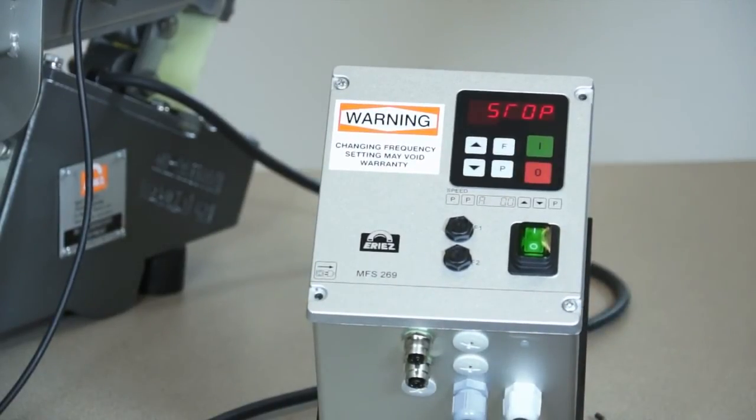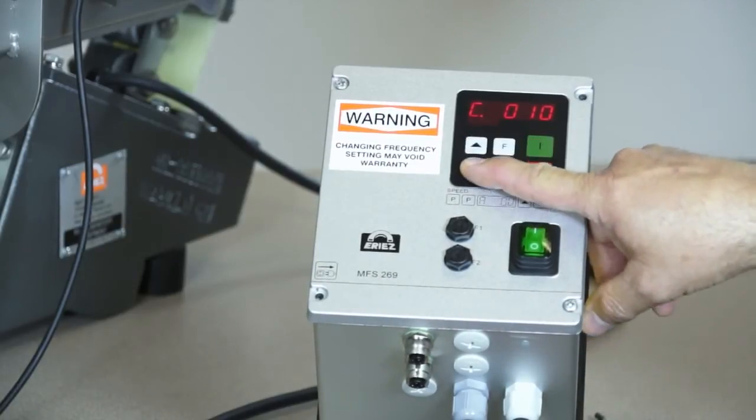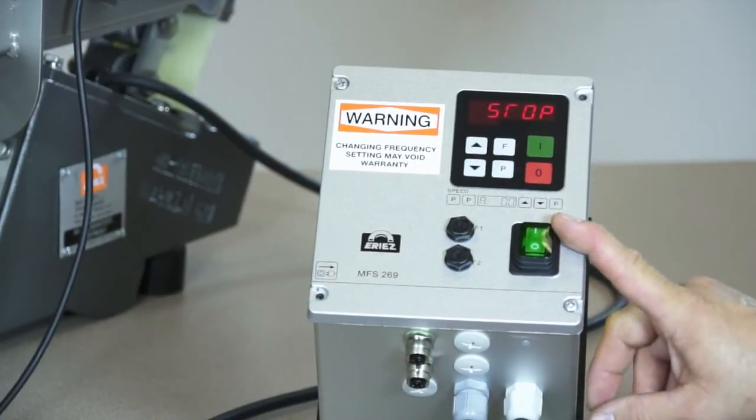Should a fault occur, consult the operations manual to determine the cause and correct it. To reset the fault, press P, go to C009, press P, then up arrow. The fault is reset.